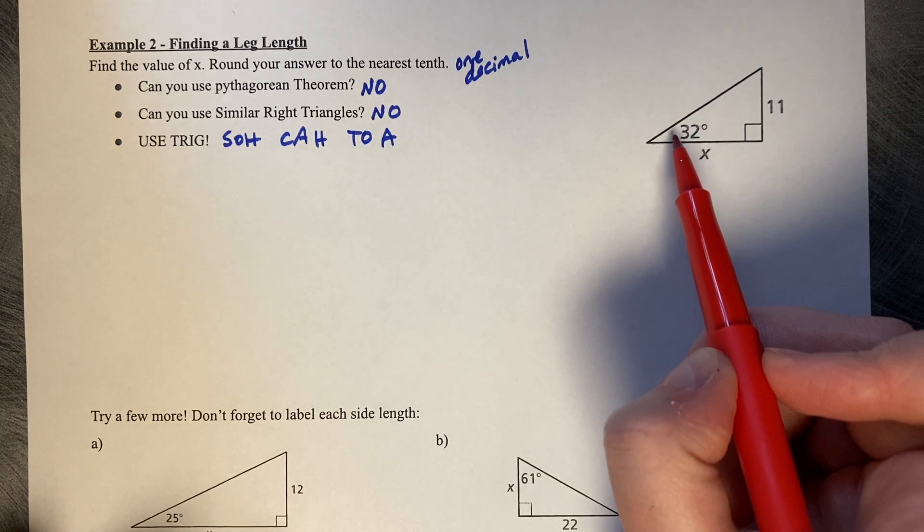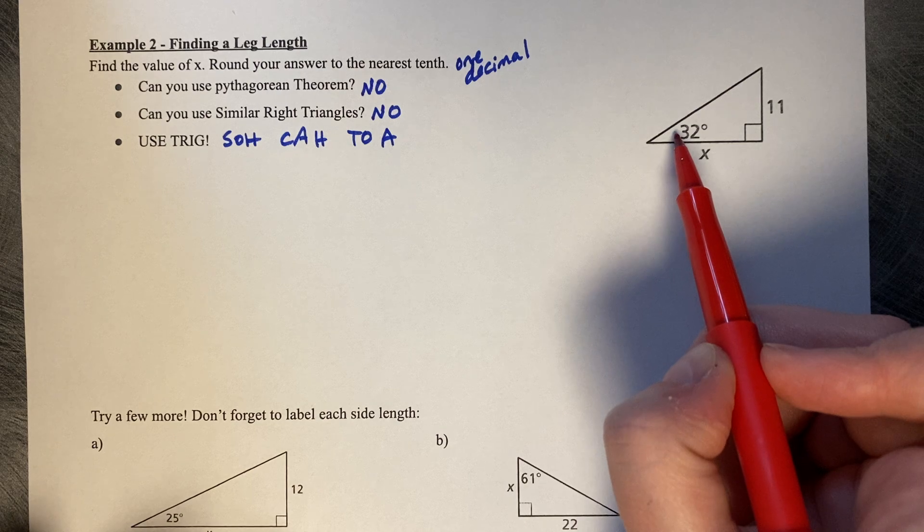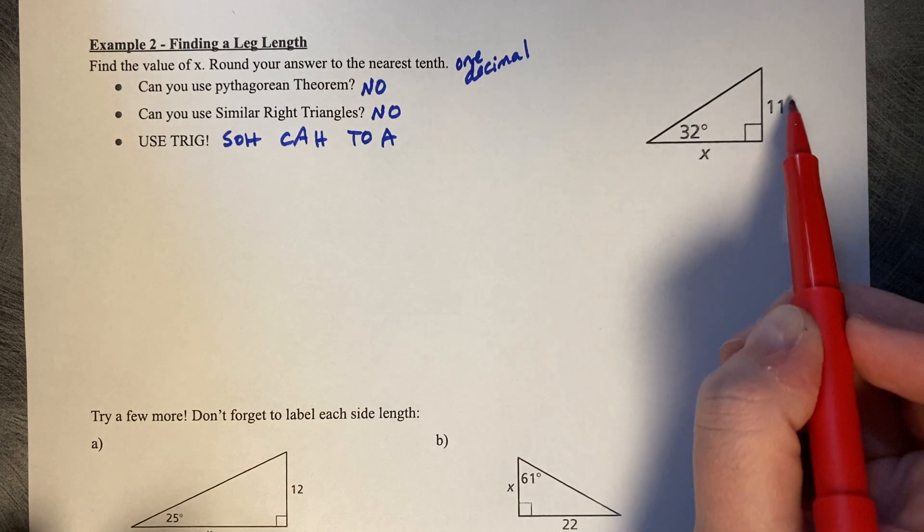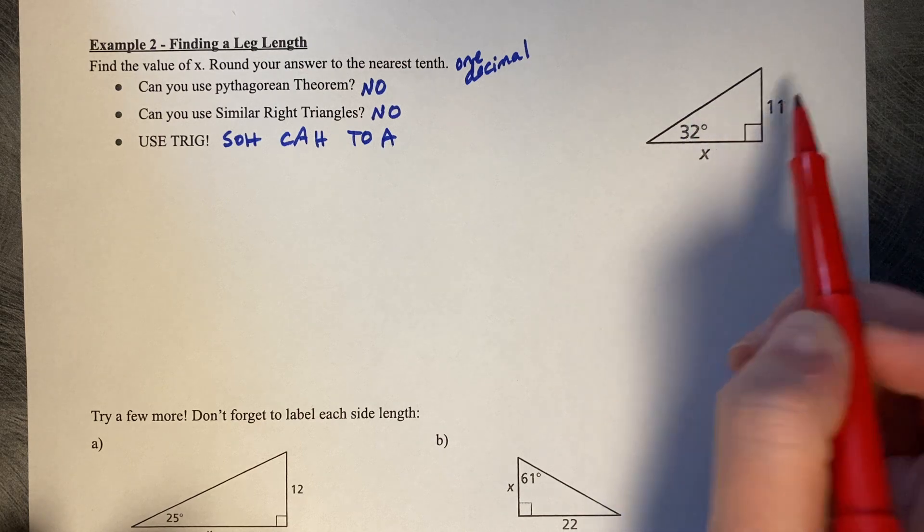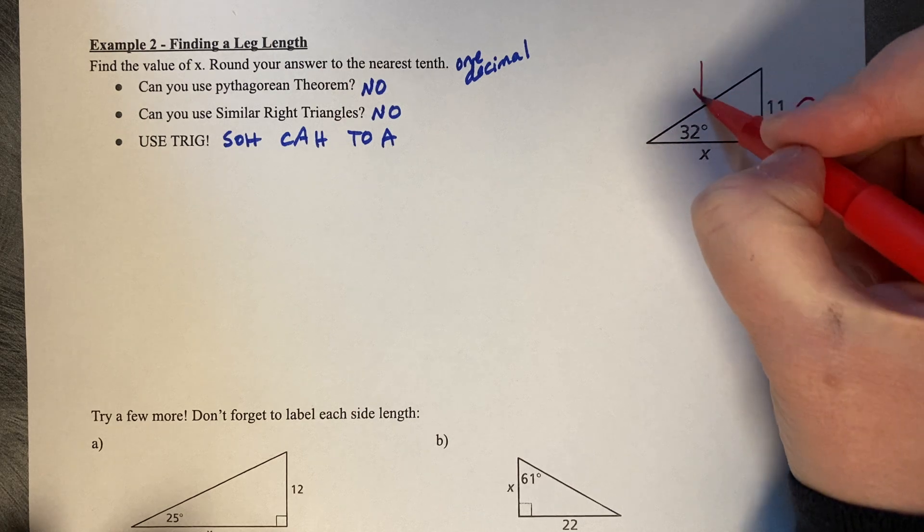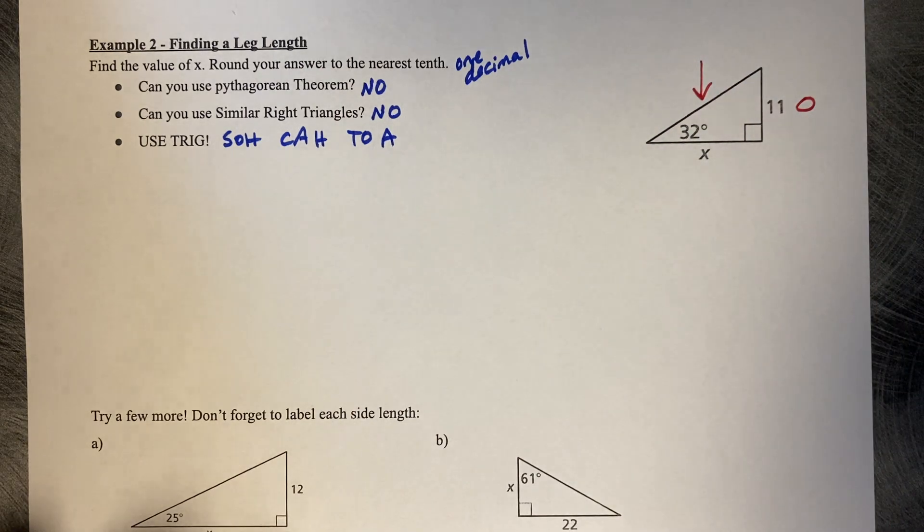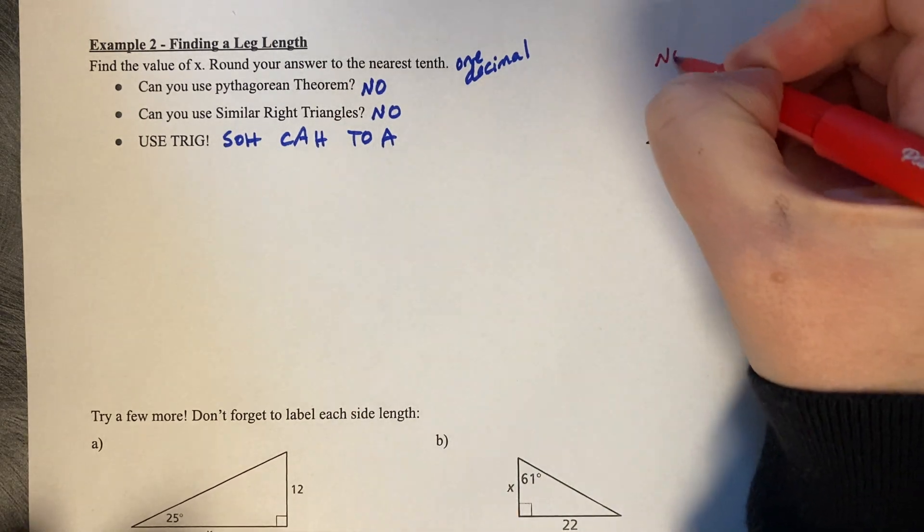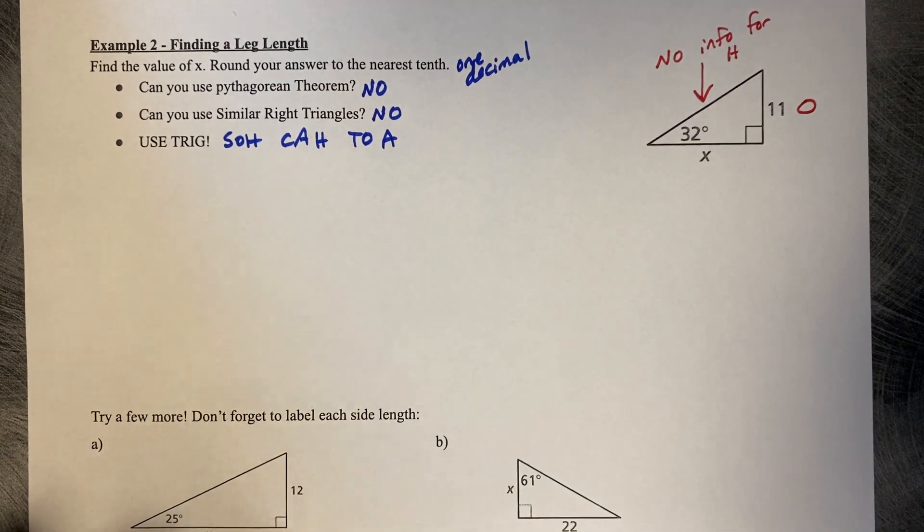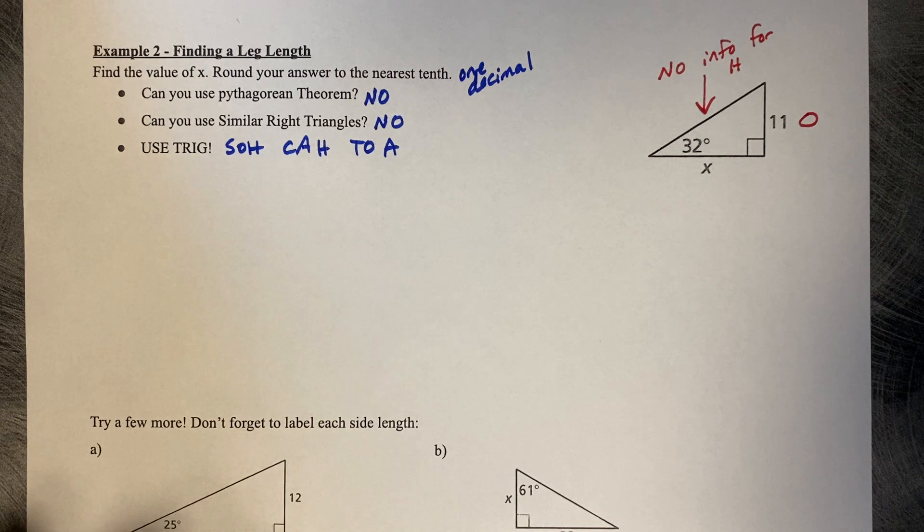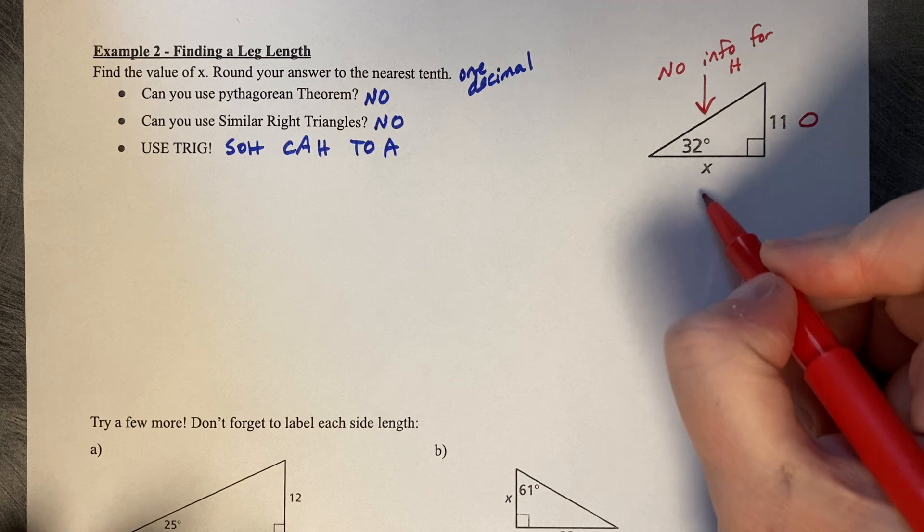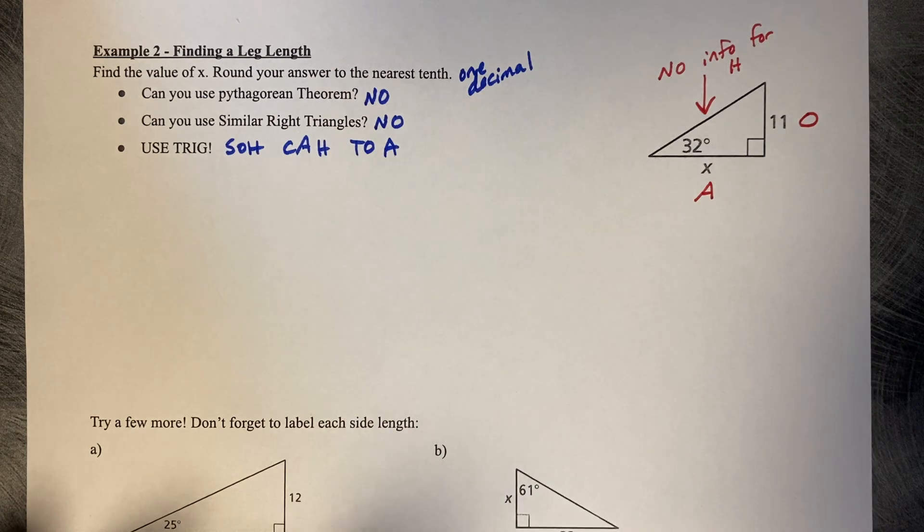Take your pen and put it on 32 degrees. 32 degrees is opposite of 11. I know that this leg is the hypotenuse, but I have no info for h. That means x is going to be my adjacent side length.